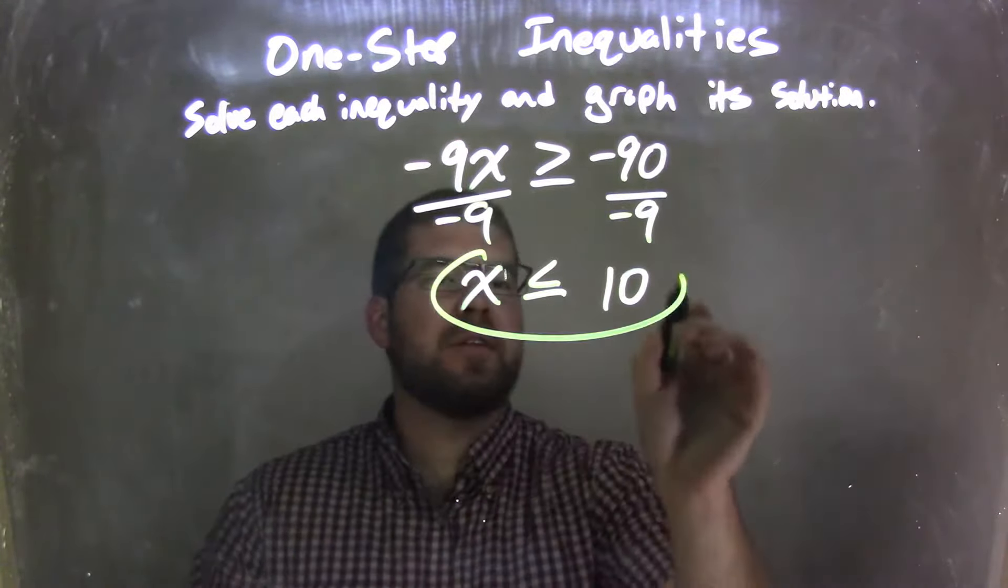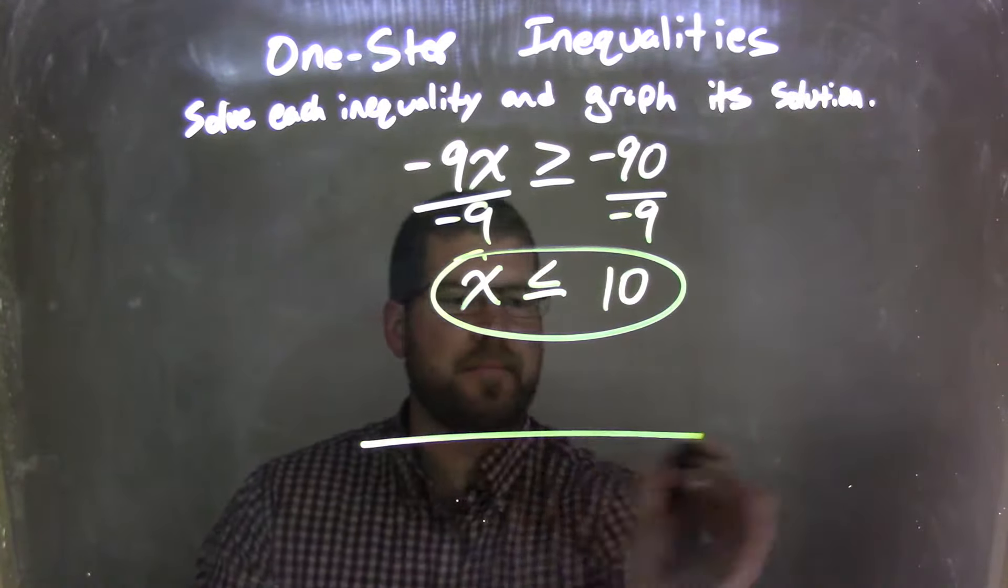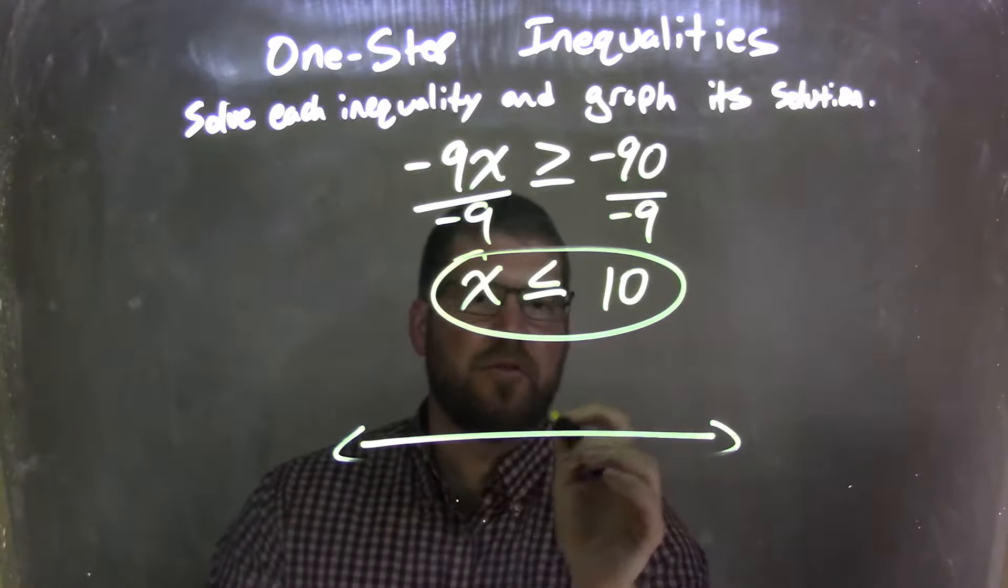So now x is isolated here, and x is less than or equal to a positive 10. I need to graph that. So it's kind of short graph, but it's okay.